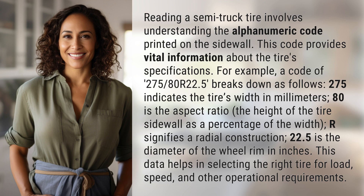The aspect ratio is the height of the tire sidewall as a percentage of the width. R signifies radial construction, and 22.5 is the diameter of the wheel rim in inches.